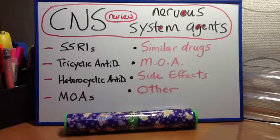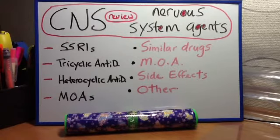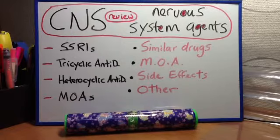Side effects of tricyclic antidepressants include sedation, postural hypotension, and anticholinergic effects such as urinary retention, dry mouth, and priapism.